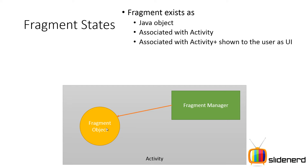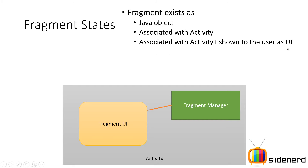Remember, it is not necessary that every fragment has a UI. The part of the fragment having a UI is kept completely different from the part about it being an object or being linked with the activity. The third state is when the fragment is actually being shown to the user as a UI element — so it is an object in Java, linked with the activity, and also visible to the user.